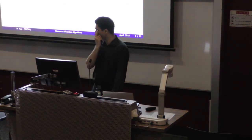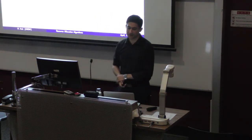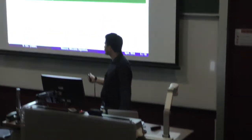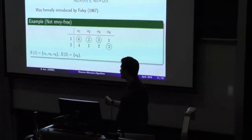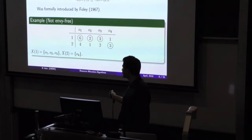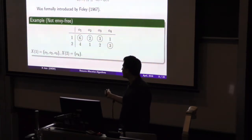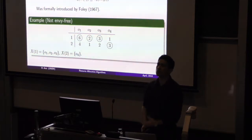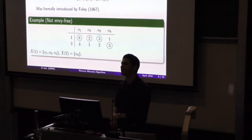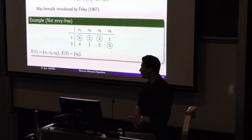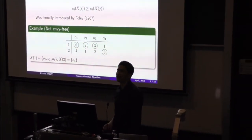As an example, if agent 1 gets items O1, O2, O3 with utility 6+2+3=11, and agent 2 gets only O4 with utility 3, agent 2 is envious of agent 1 because agent 2 thinks she would get more utility from agent 1's allocation. So this allocation is not envy-free.